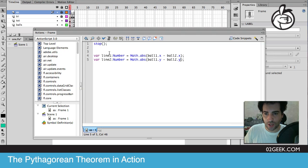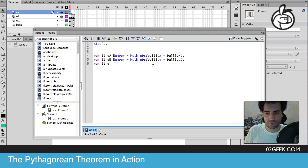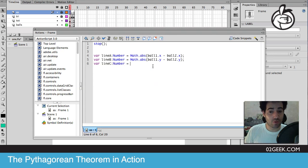And by the way, instead of calling it line one, line two, we could call this maybe line A, line B, so that way it's easier for us to compare to the Pythagorean theorem. Alrighty, so let's create line C, which is a number as well. But this time around...